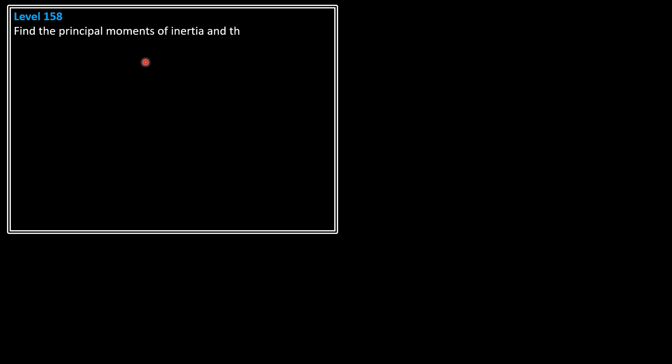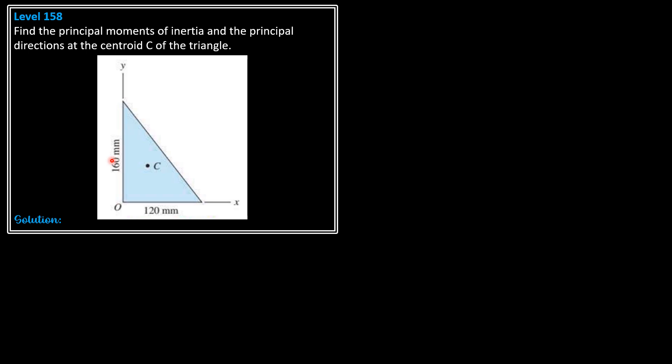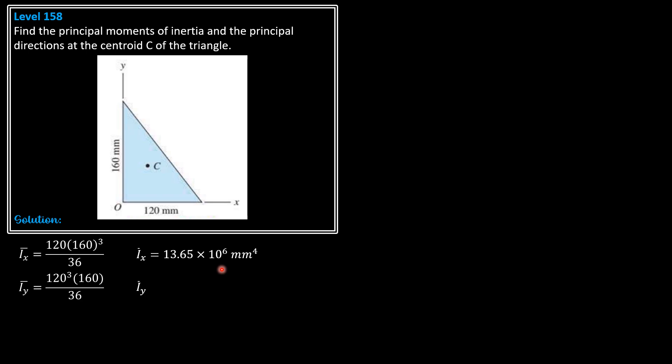So that's it for Level 157. Level 158: find the principal moments of inertia and the principal directions at the centroid C of the triangle. Here is the given figure — a right triangle. For our solution, I̅x for a triangle is bh³ over 36: 120 times 160³ over 36, equal to 13.65 × 10⁶ mm⁴. I̅y is b³h over 36: 120³ times 160 over 36, equal to 7.680 × 10⁶ mm⁴.